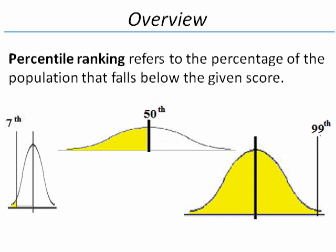Percentile ranking refers to the percentage of the population that falls below a given score. On this slide, there are three examples of percentile ranking. On the left is someone who is at the 7th percentile. This person scored above 7% of the population.